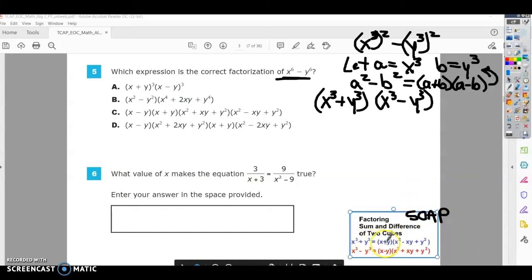And SOAP kind of helps you remember how to factor it. So you're going to start with s, which is the same sign. So we're going to start with the same sign. So let's go ahead and do x cubed plus y cubed. So I'm going to start with x plus y. And then I'm going to have opposite sign. O is for opposite sign. And then this plus is always positive.